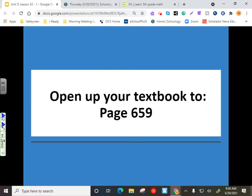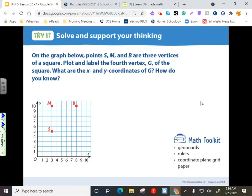All right, this lesson starts on page 659. And on here, it says, on the graph below, points S, M, and B are three vertices of a square. Plot and label the fourth vertex, G, of the square. What are the X and Y coordinates of G, and how do we know? So, we know from going over geometry that for a square, each side is the same distance. So, each side is the same length.